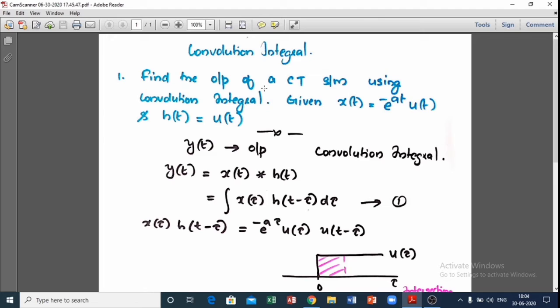Find the output of a CT system using convolution integral. Given x(t) = e^(-at)u(t) and h(t) = u(t), we need to find the output of the CT system using convolution integral.